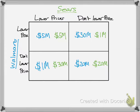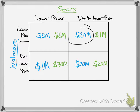Now let's look at a more business-based example. This is Sears and Walmart making decisions on whether or not to lower their prices. Walmart is in blue, Sears is in green. If Walmart lowers their prices and Sears lowers theirs, Sears gets five million. If Sears doesn't lower their prices, they only make one million. That means Walmart would make a lot more if they lower their prices and Sears doesn't — and same thing if Sears lowers and Walmart doesn't, Sears makes a lot of money.